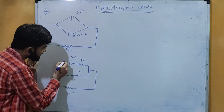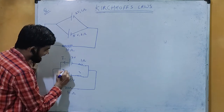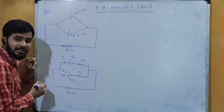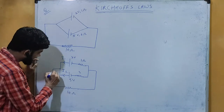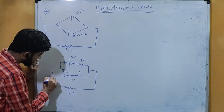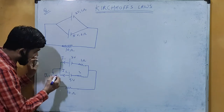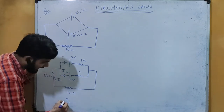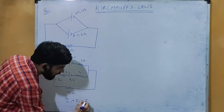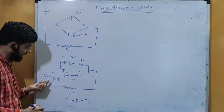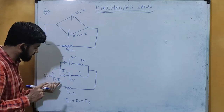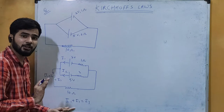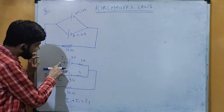We have to find the value of current from each cell. For the first cell, assume current i1, and from the second cell assume it to be i2. At the junction, there will be addition of these two, so I can write i1 plus i2, or simply write this as i3. According to KCL: i1 plus i2 equals i3.